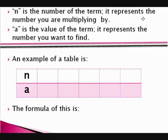So, here is an example of the table. Let's say that we want to find five answers, so we would write 1, 2, 3, 4, and 5 next to the N row, because those are the 5 that we will multiply by.